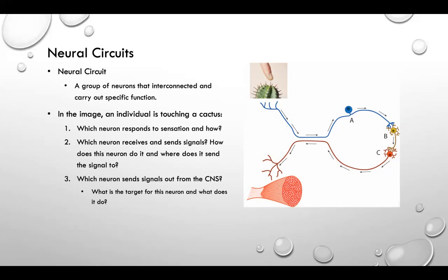Question 3. Which neuron sends signals out from the CNS? We can see that neuron B is sending the signal to neuron C, which means neuron C sends the signal out from the CNS through action potential to a group of muscles. Which leads us to our next question. What is the target for this neuron and what does it do? We identified that the target for this particular scenario is the muscle cell. The muscle cell is targeted and it causes the muscle to contract. Meaning when you put your hand on the cactus it will respond and remove your hand from the painful stimulus, which is the prickling of the cactus.